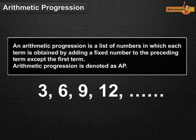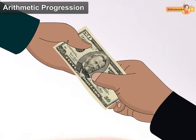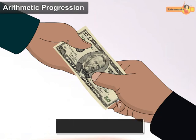Consider some examples. The balance money after paying 5% of the total loan of $1,000 every month is $950, $900, $850, $800 and so on.